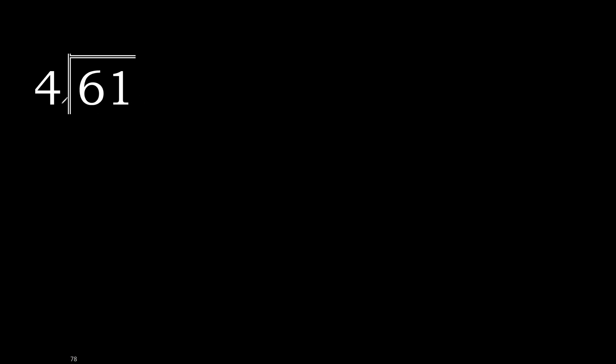61 divided by 4. Starting with 6 — 6 is not less, so we work with 6. 4 multiplied by which number is nearest to 6 but not greater? 4 multiplied by 2 is 8, which is greater. Therefore, 4 multiplied by 1 is 4, which is not greater. 6 minus 4 is 2.